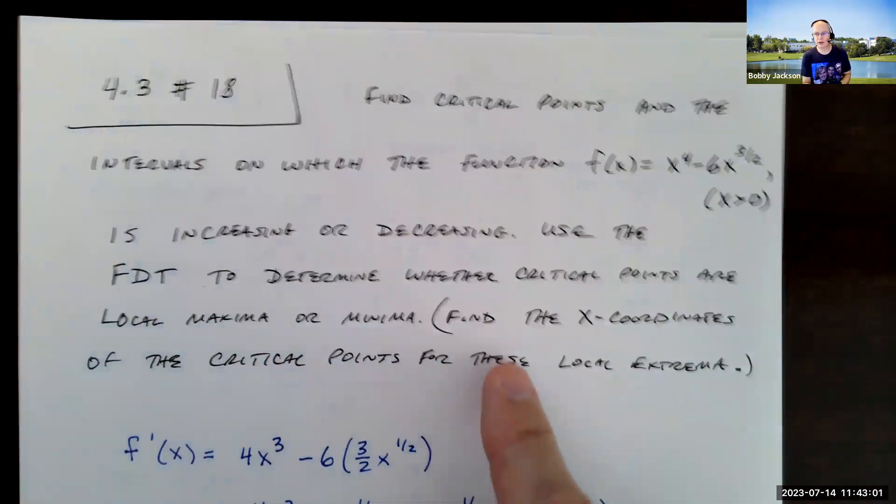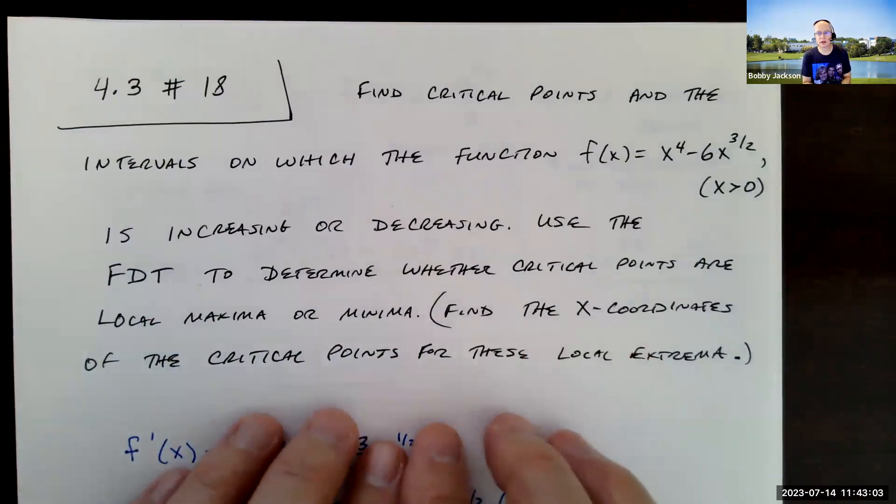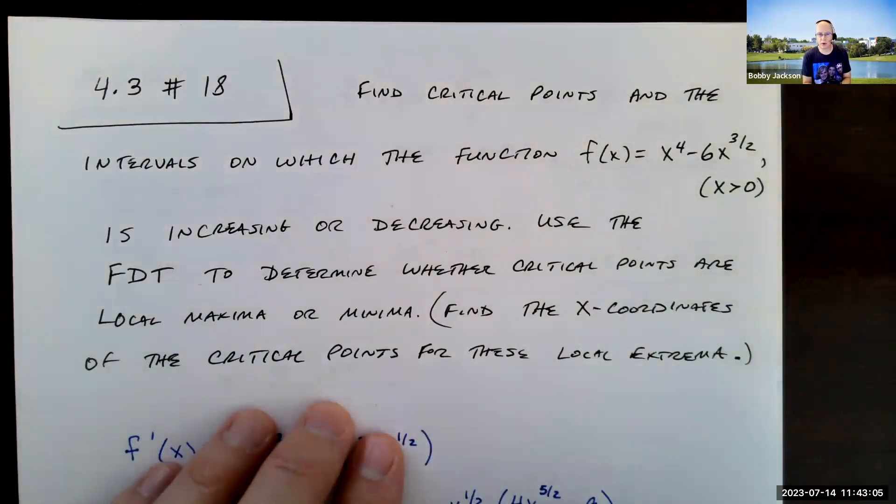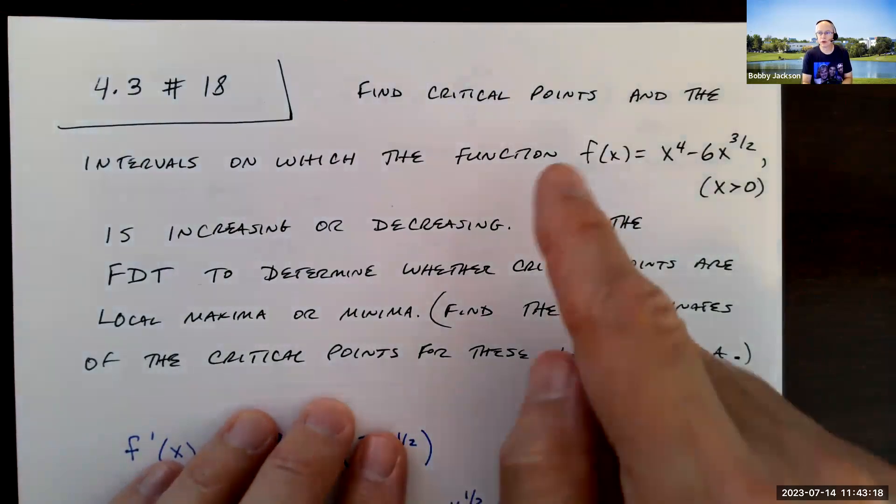And when you give the answer, they just ask for the x-coordinates. So pay close attention to the format, how they want things. Sometimes, like if they want inflection points, they want both the x and y-coordinates. Other times they just want the x value only. So be careful about that.